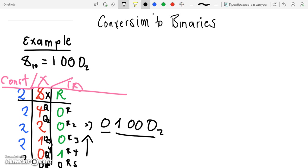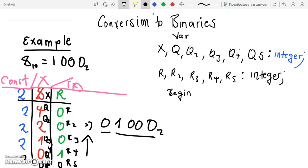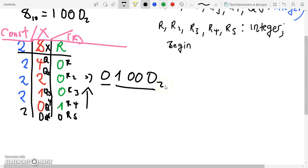Our task today is to use a computer to find binaries. We're just going to start from variable declaration. We have x, Q for quotient from Q to Q5, and R's from R to R5. These are all integers.